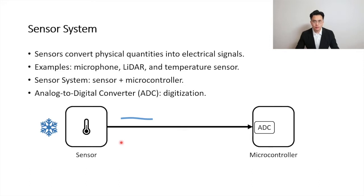In a sensor system, the sensor sends an analog signal to a microcontroller. The microcontroller then uses an analog-to-digital converter, or ADC, to digitize the analog signal, so the microcontroller can further process it. You may wonder: what about digital sensors? Actually, all sensors are analog in nature. A digital sensor includes such an analog sensor and an ADC, so its output is digital.